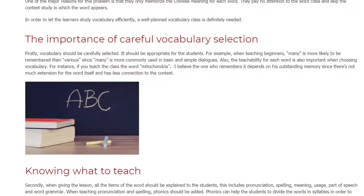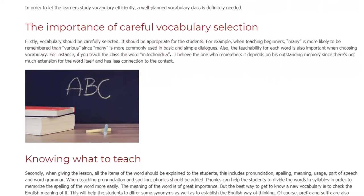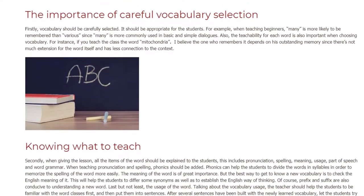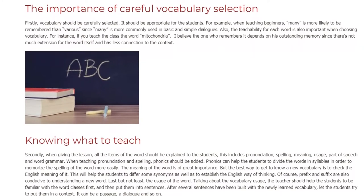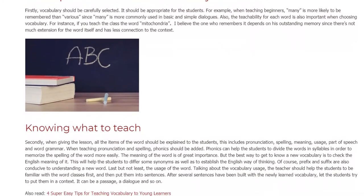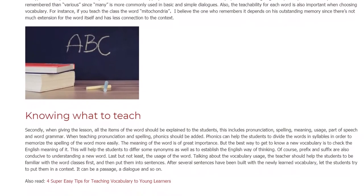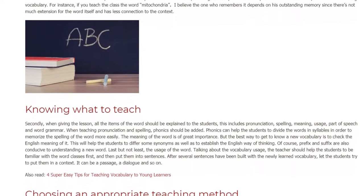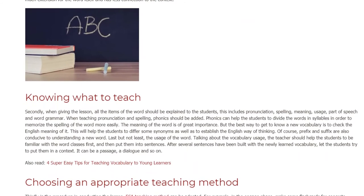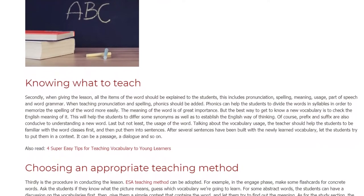The meaning of the word is of great importance, but the best way to get to know new vocabulary is to check the English meaning of it. This will help students differentiate some synonyms as well as establish the English way of thinking. Of course, prefix and suffix are also conducive to understanding a new word. Regarding vocabulary usage, the teacher should help students become familiar with the word classes first, then put them into sentences. After several sentences have been built with a newly learned vocabulary, let the students try to put them in a context such as a passage or a dialogue.